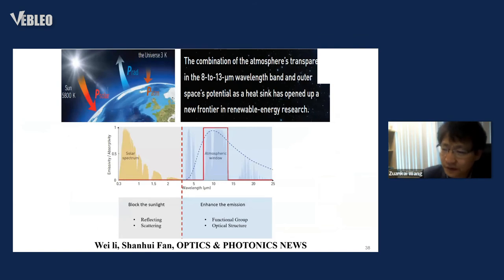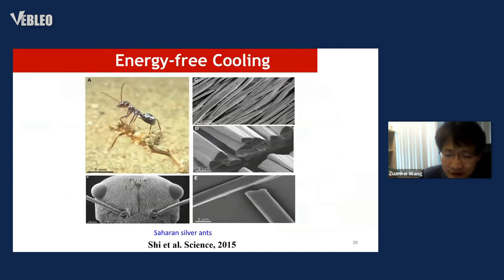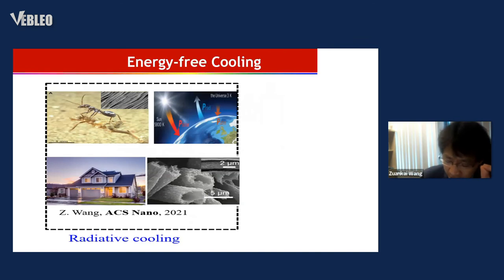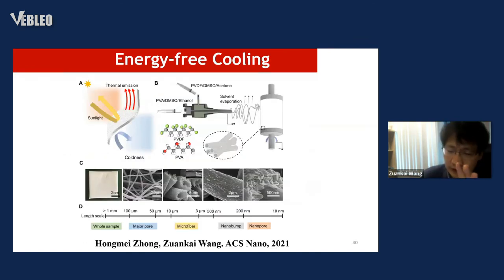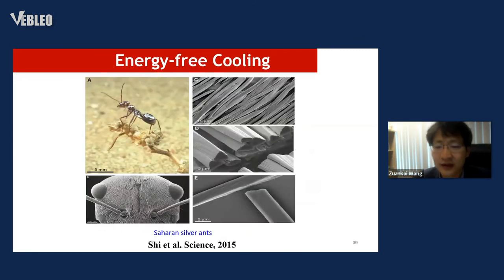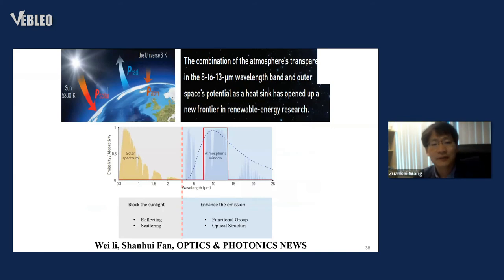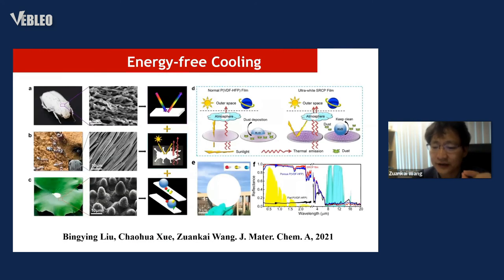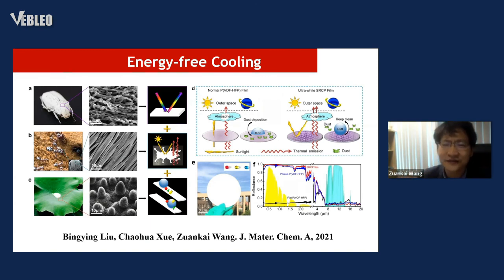Learning from some beetles in the desert, we developed a micro-nanostructure which can prevent absorption in the optical wavelength but send heat out to the universe — to space — because the temperature in deep space is only 3K. This enables radiative cooling. By this way, we can passively cool down the material. It's not extremely efficient, but it is energy-free — we don't apply any energy.